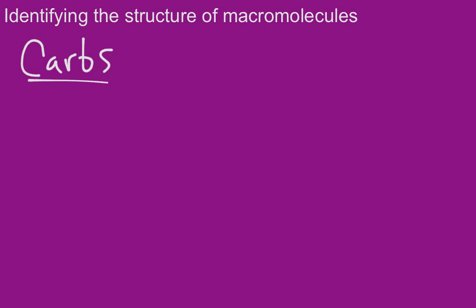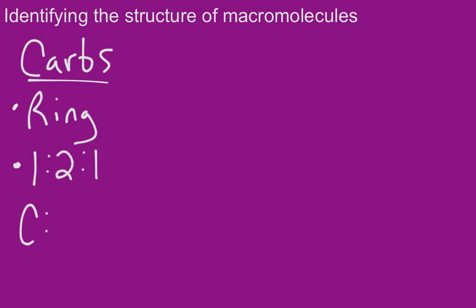We're going to start out by looking at carbohydrates, and there are a few things we want to know about carbs. Usually they're going to be in some type of ring structure, and if they're not in a ring they're going to be in a one-to-one ratio of carbon to hydrogen to oxygen. These are the only elements you're going to find in carbs, and that's going to help us identify them.